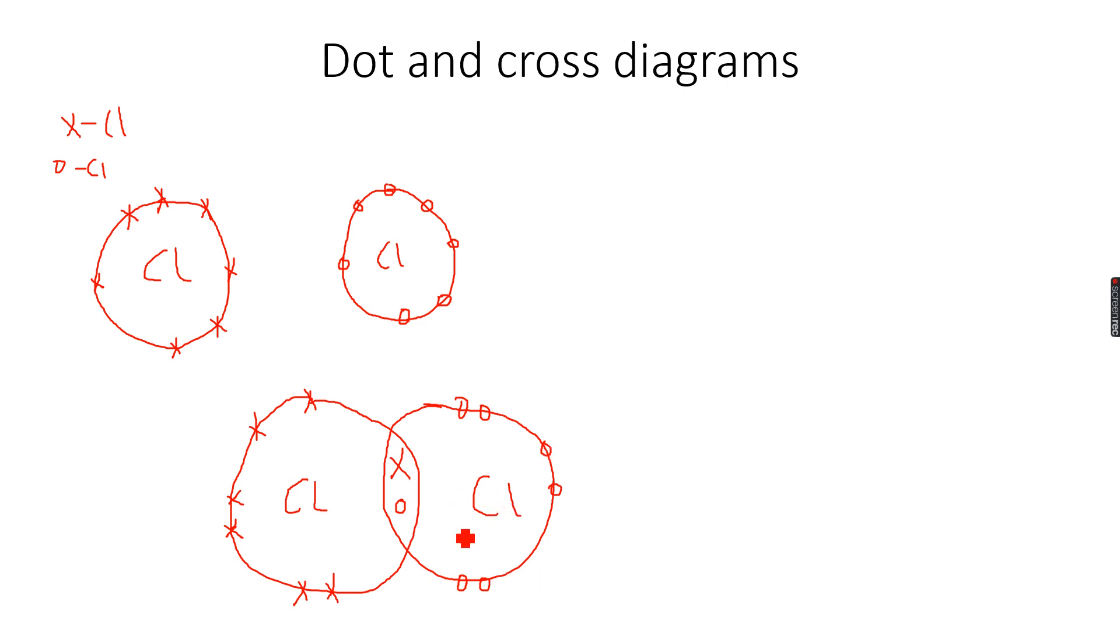When I calculate the total number of outer electrons for each atom: 1, 2, 3, 4, 5, 6, 7, 8. Then for this atom: 1, 2, 3, 4, 5, 6, 7, 8. Now both are happy by sharing these electrons.